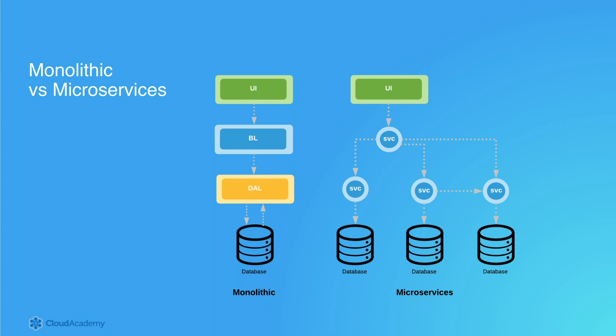As seen here, monolithic based applications tend to have a very simple layered structure of components. In this case, the typical three-tiered application consists of a user interface layer, a business logic layer, and a data access layer.